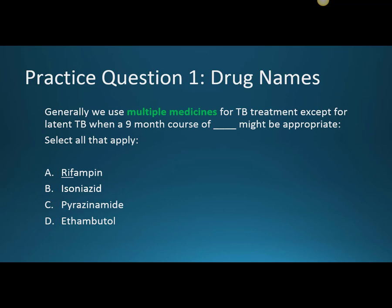Practice question one: we use multiple medicines for TB treatment, except for latent TB when a nine-month course of which drug might be appropriate? The answer is Isoniazid. It's really the staple of the four drugs we would use initially for active TB.